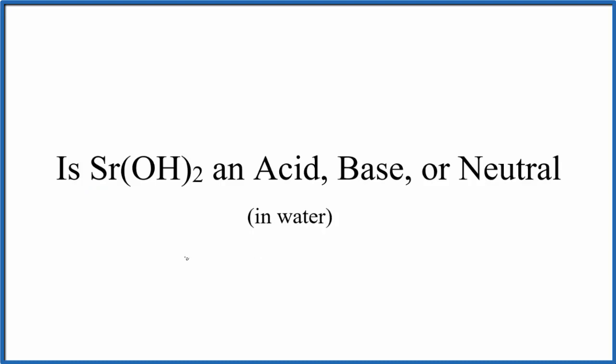The first thing that we need to note is we have strontium, that's a metal in group 2 on the periodic table. Then we have this OH group here. Whenever we have a metal bonded to OH, this is called the hydroxide ion. When we have the hydroxide ion, we have a base.